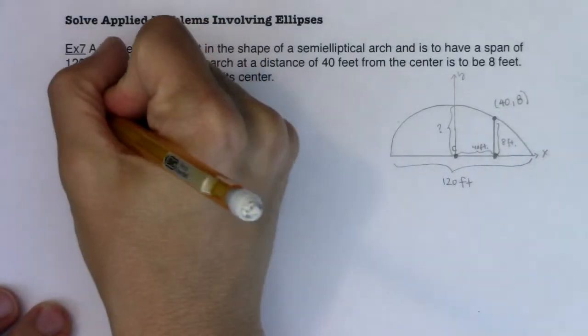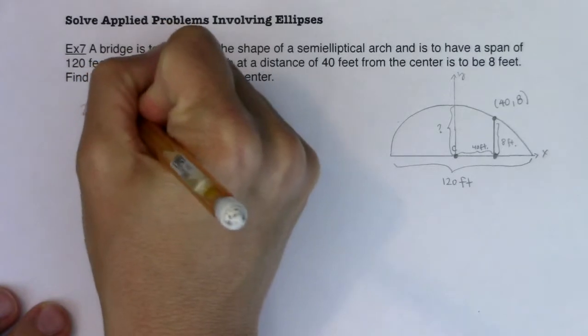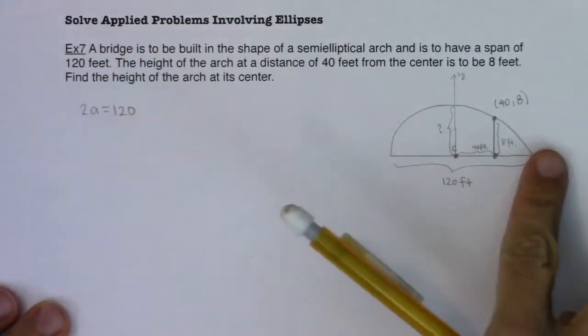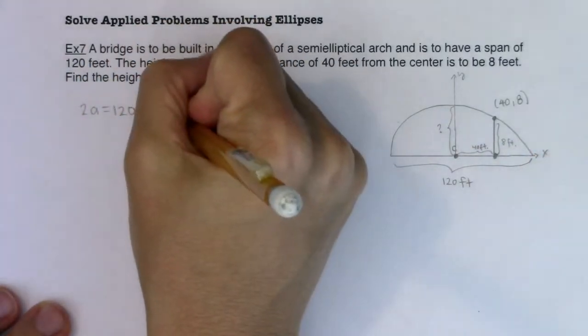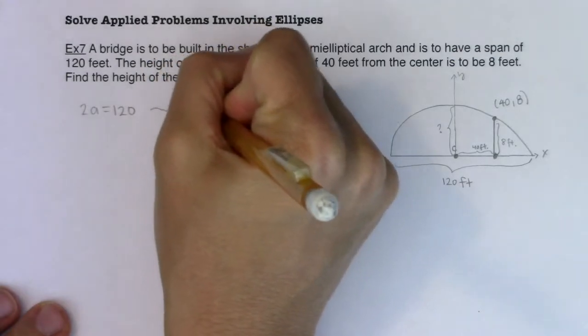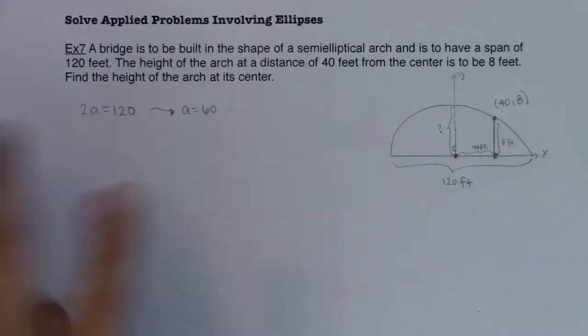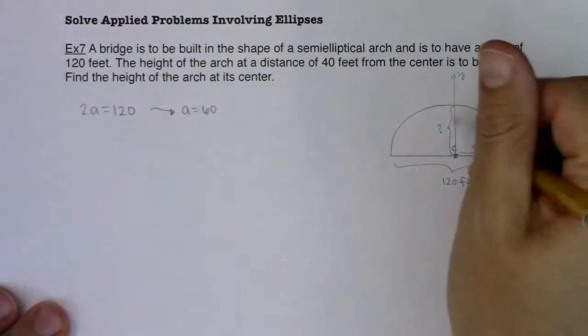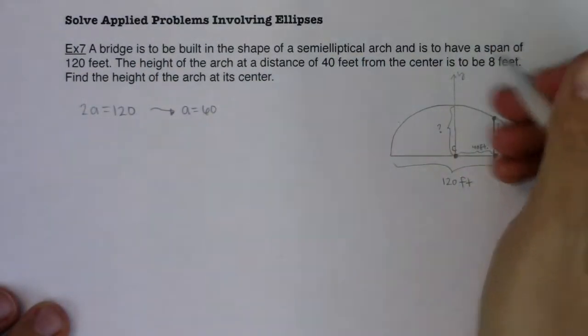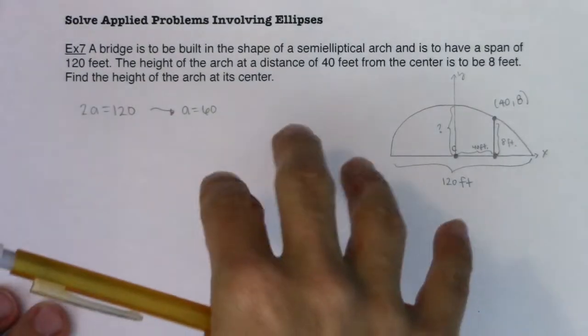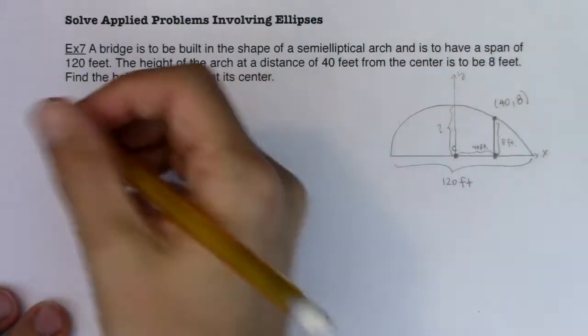We know that 2a would have to be equal to 120 because this would be my major axis, and so that's gonna tell me that a is equal to 60. Keeping that in mind I would like to find the height of my arch so basically I want to find my b value. If I could find my b value I answer this question.